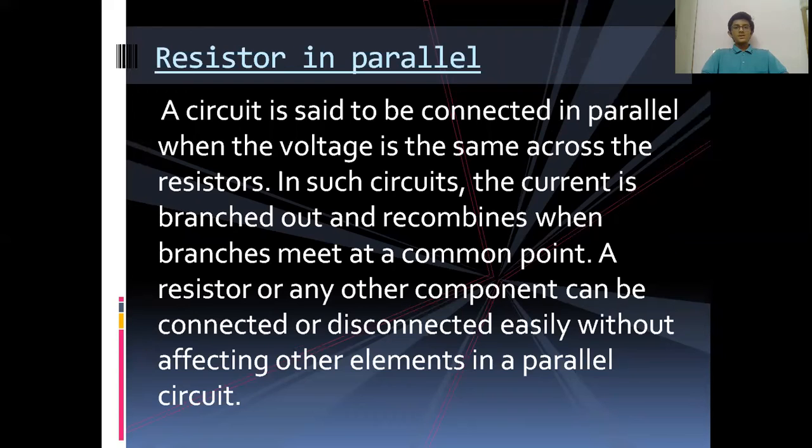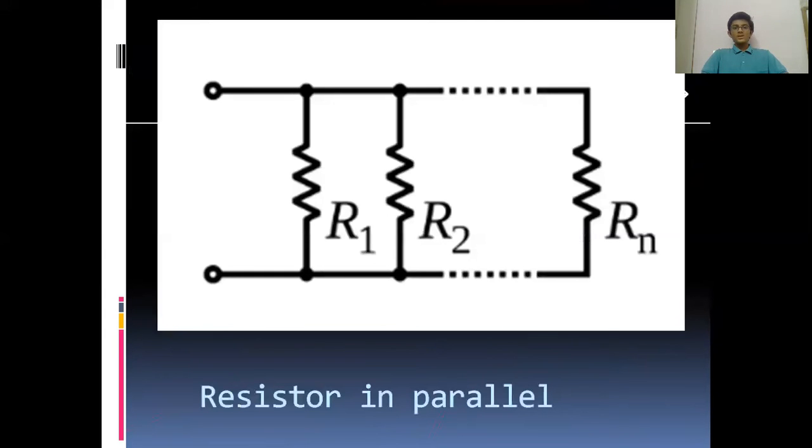Resistors in a parallel circuit are more complex than resistors in series combination. Here is the figure for resistors in parallel. Here, resistors R1 and R2 are connected in parallel. The figure shows Rn number of resistors connected in parallel.